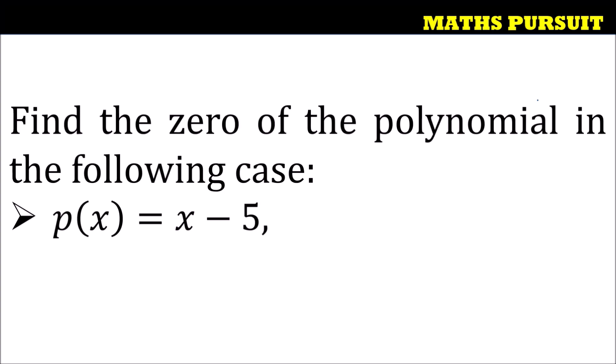So guys, let us see how we can find out the zero of the given polynomial. Here the question has given us this polynomial p(x) = x - 5, and is asking us to find out the zero of this polynomial.